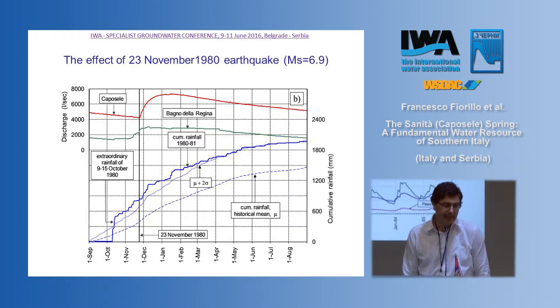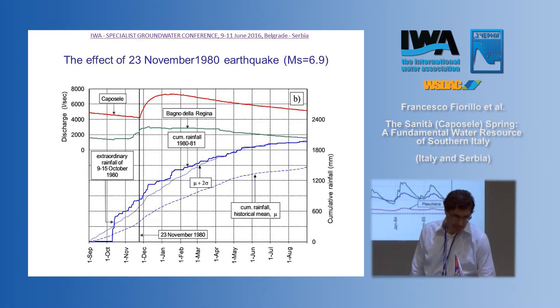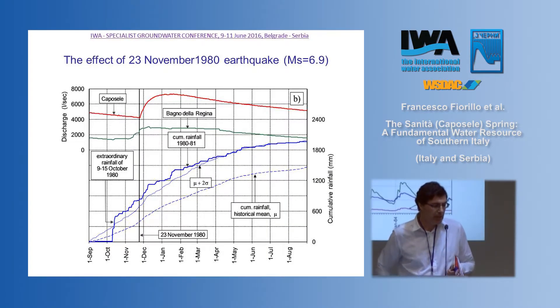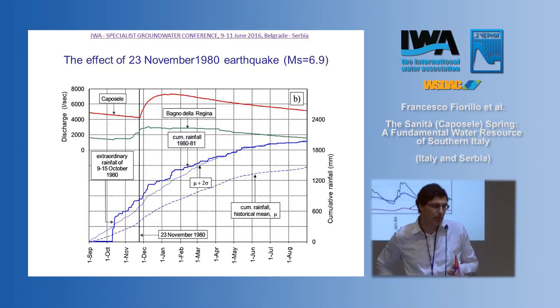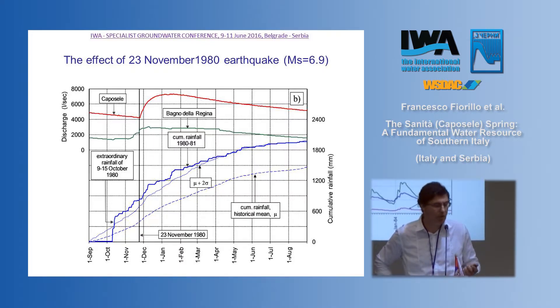On 23 November 1980, a major earthquake occurred in southern Italy. The epicenter was located just a few kilometers from the Caposele spring. The day after the earthquake, the discharge of the Caposele spring increased rapidly, and 45 days later it reached the maximum value in the historical series. In other local springs — Cassano, Bagno della Reggina, and Pollentina — the increase in recharge occurred before the earthquake, which some researchers suggest may be a possible precursory sign, though this is a controversial topic.